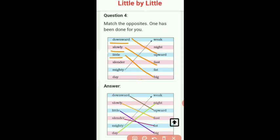The next word is slender. And the meaning of slender is thin, yaani dubla. So the opposite of this word will be fat. And the opposite means mota.